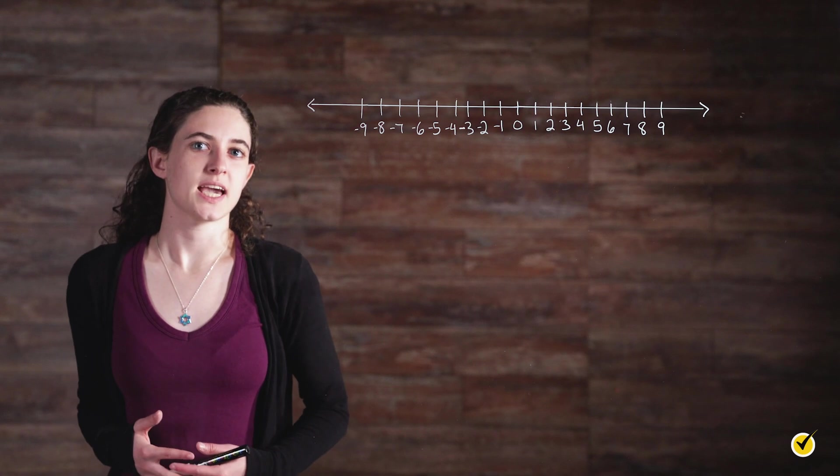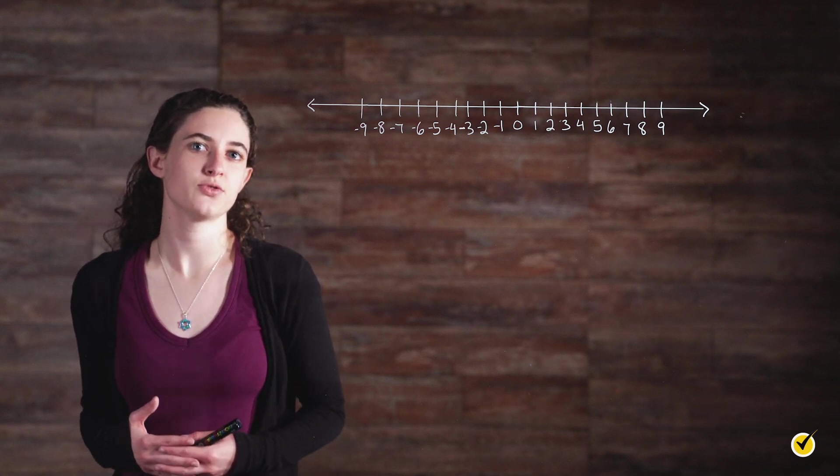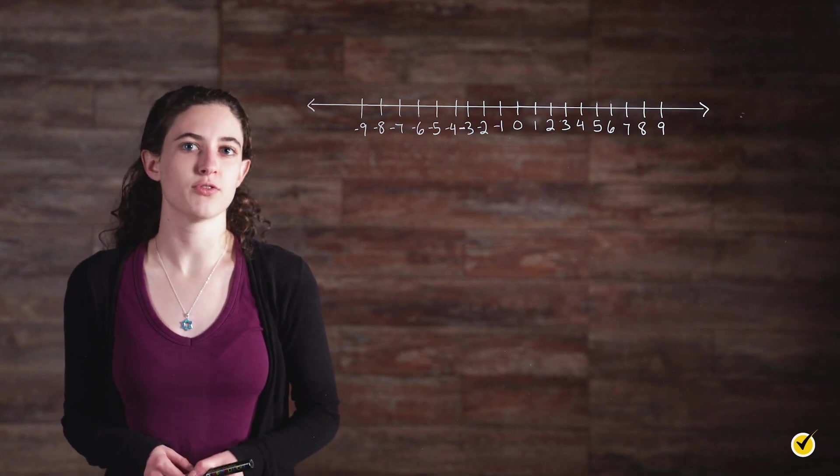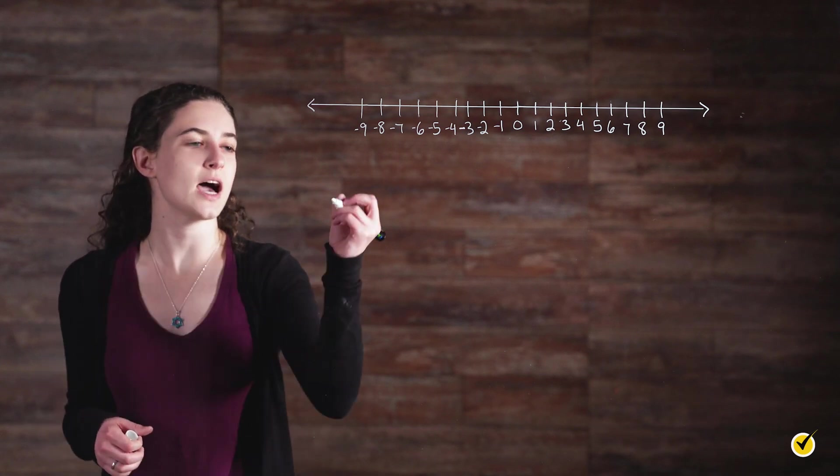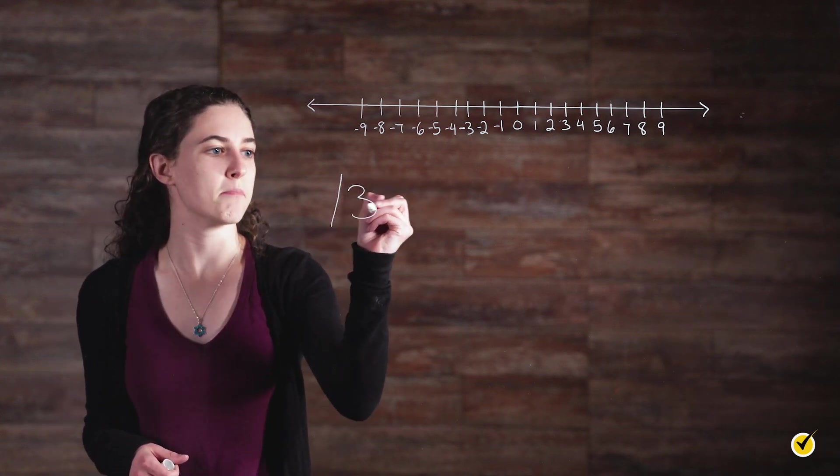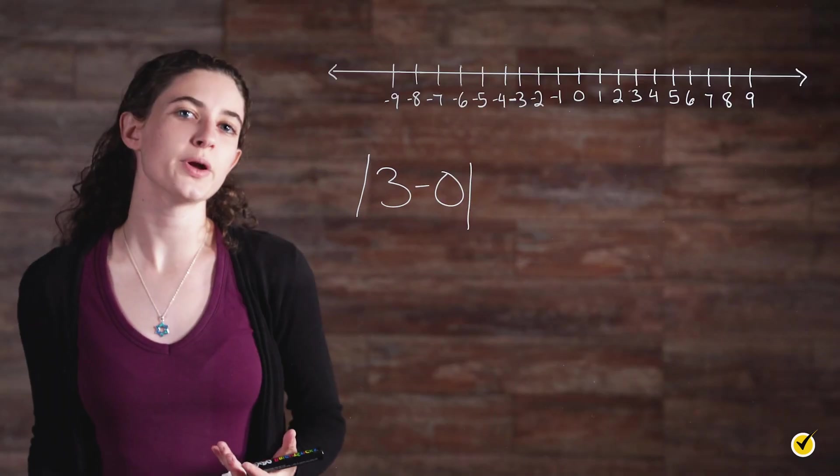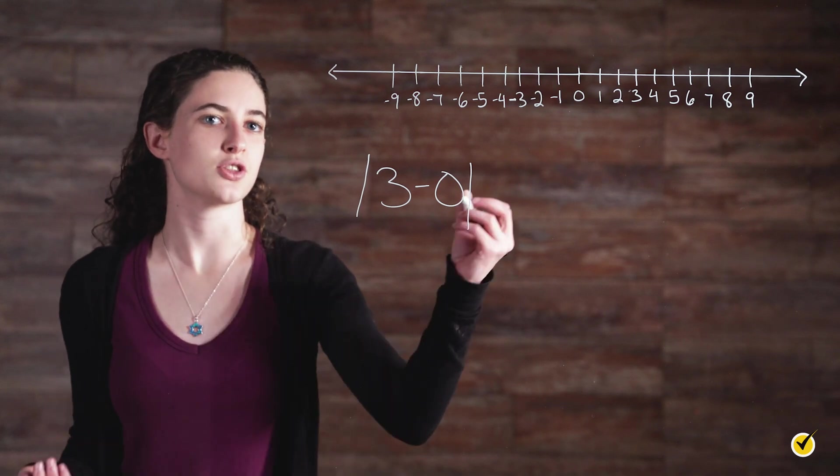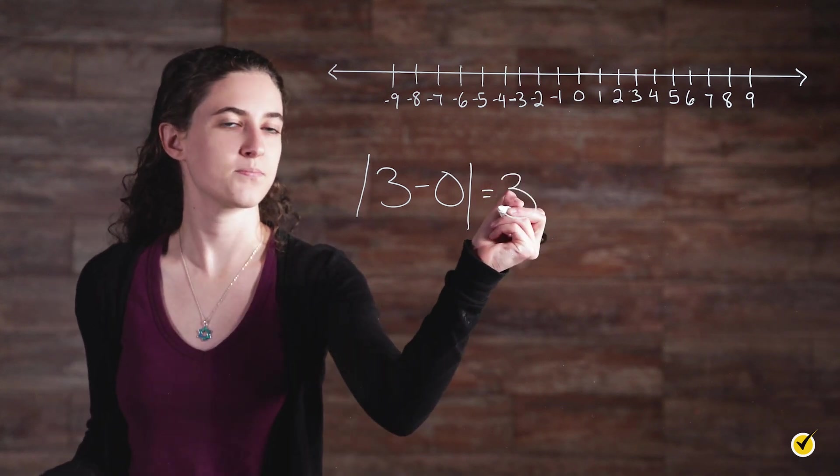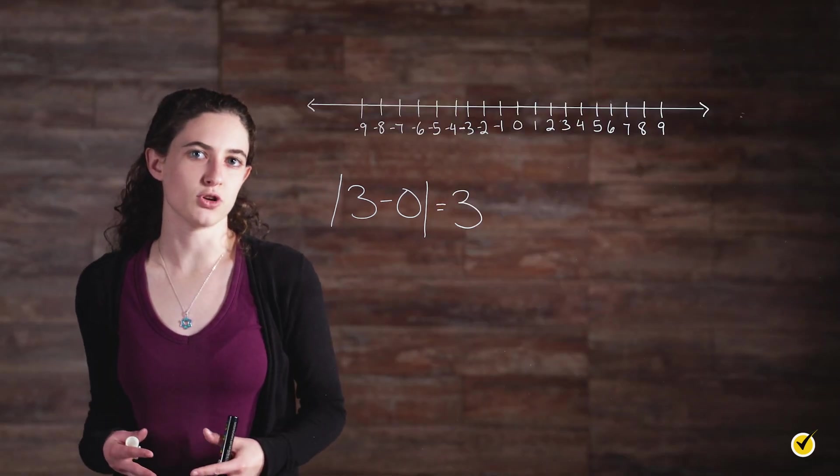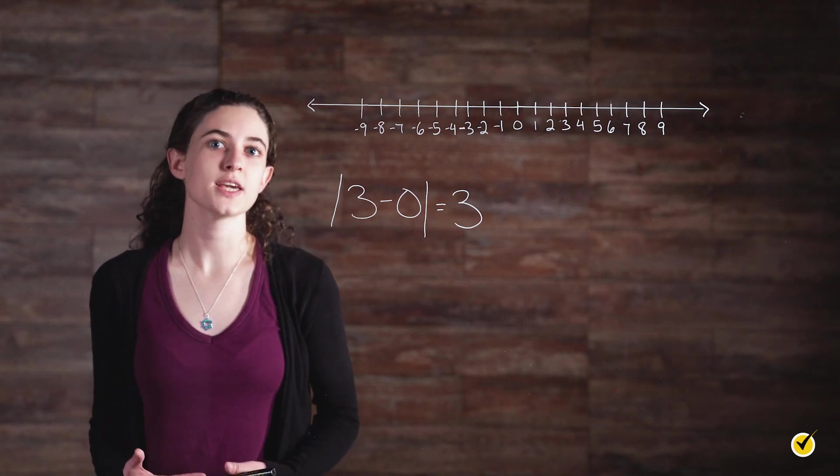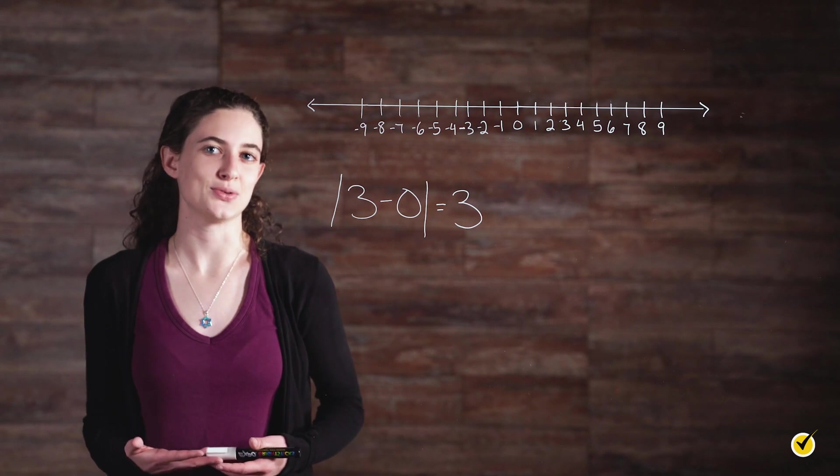Since absolute value is a calculation of a number's distance from zero, an absolute value expression, such as the absolute value of three, can be written as the absolute value of three minus zero. Another way to interpret this statement is by saying the distance between three and zero is three. Writing it this way provides the same result. The second number here doesn't need to be zero though. We can actually calculate the distance between any two numbers.